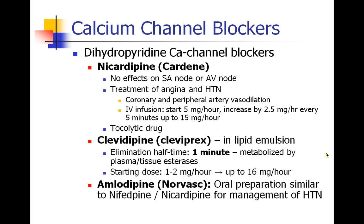Nicardipine, also known as Cardene, was for many years our mainstay calcium channel blocker to control hypertension. It doesn't really have effects on the SA or AV node and is used to treat angina or hypertension through coronary and peripheral artery vasodilation. You run an IV infusion starting at 5 milligrams per hour and titrate up or down every 5 minutes to reach your target. Nicardipine is also tocolytic, meaning it inhibits labor, so it might be used in the treatment of premature labor.